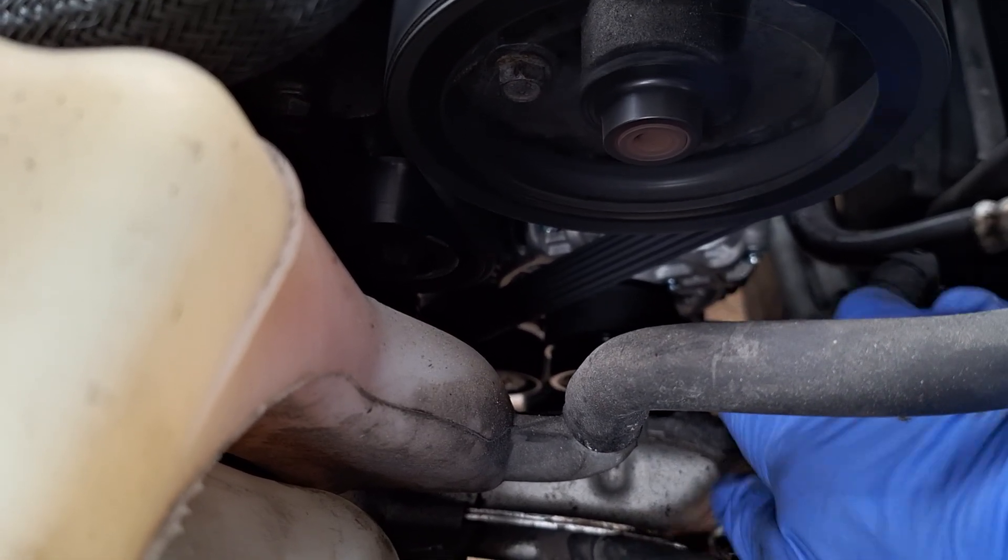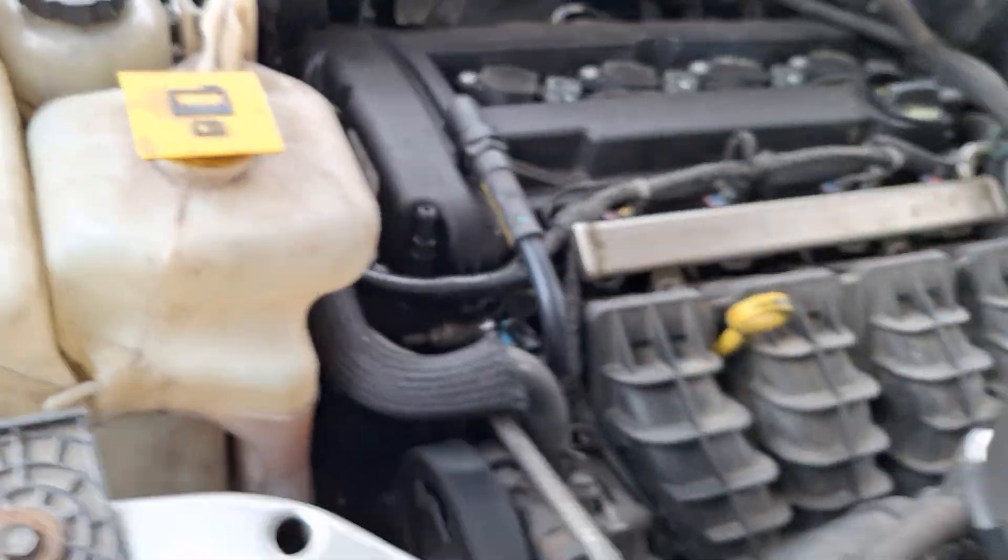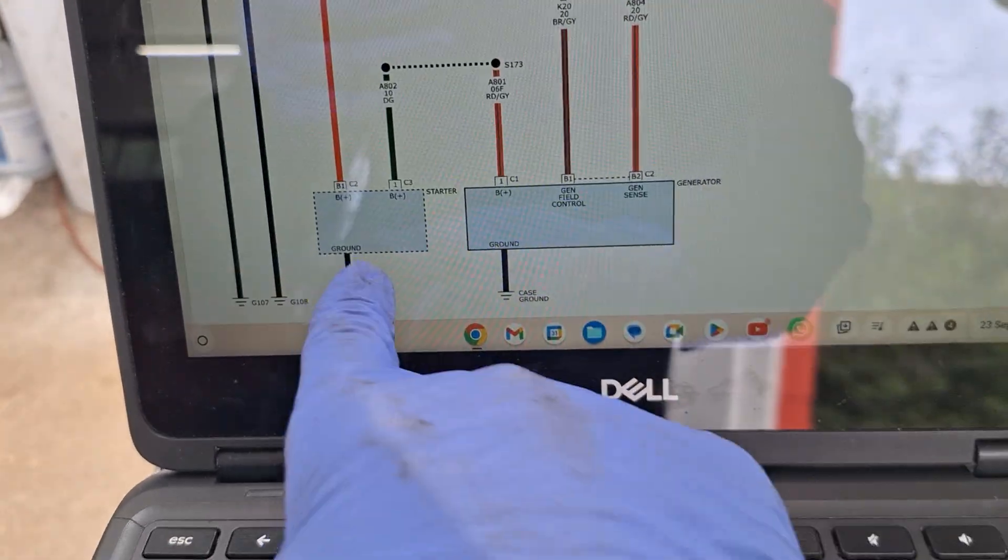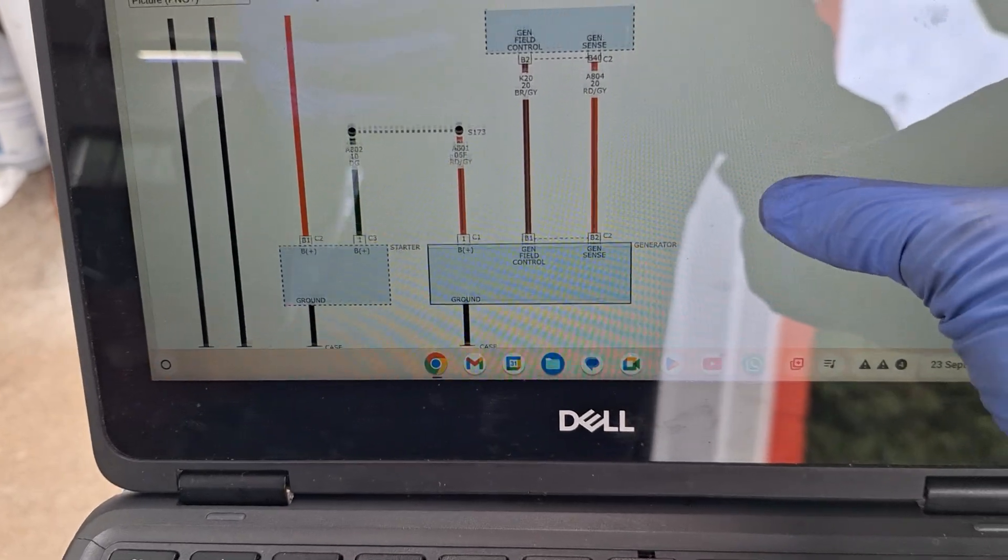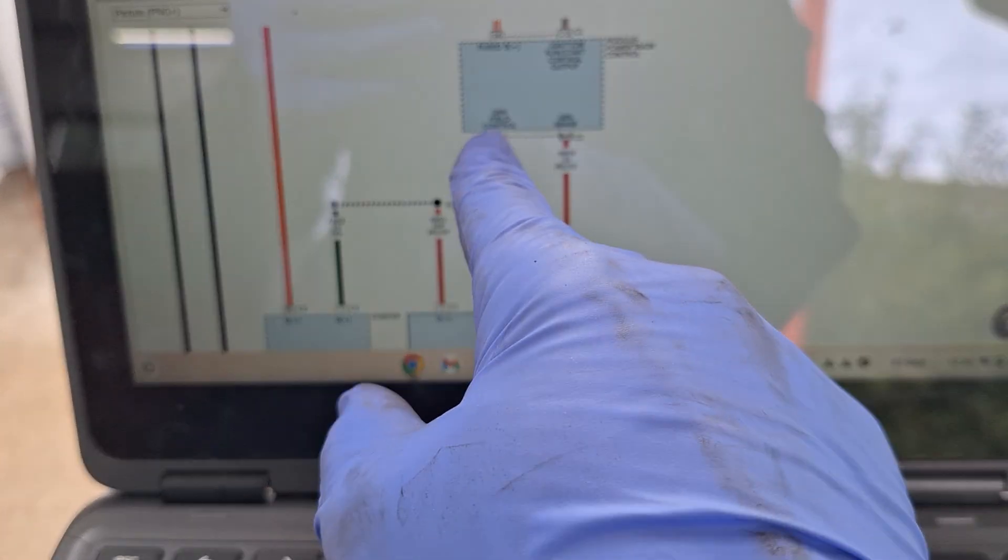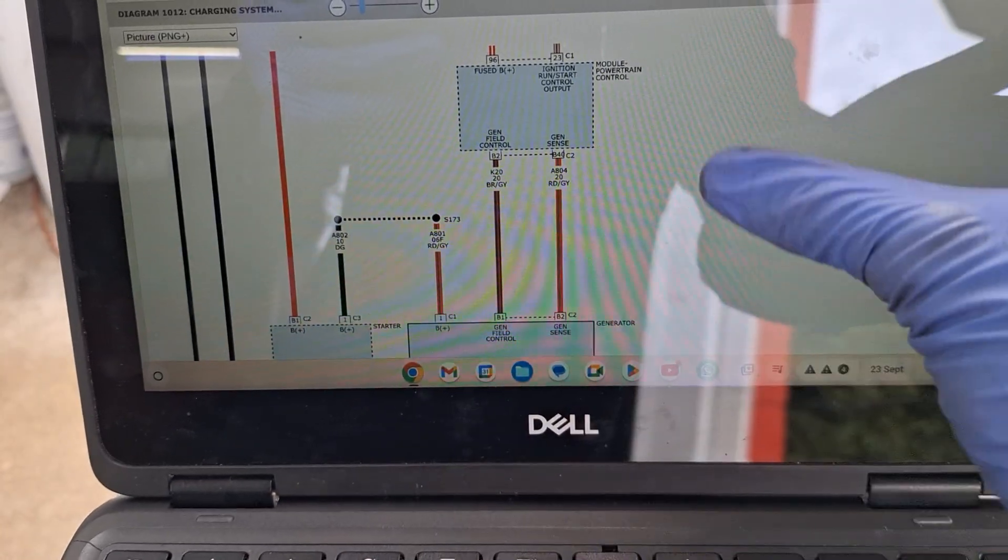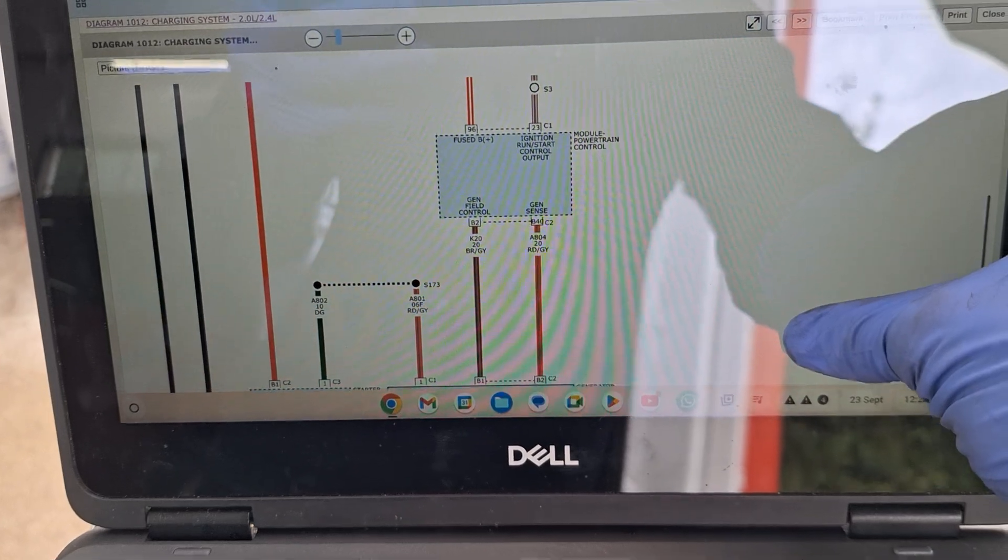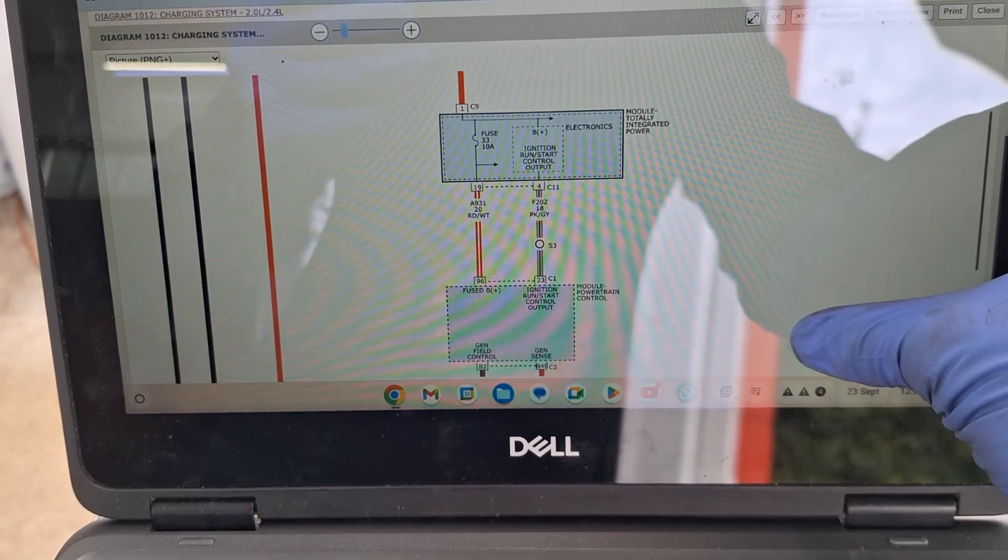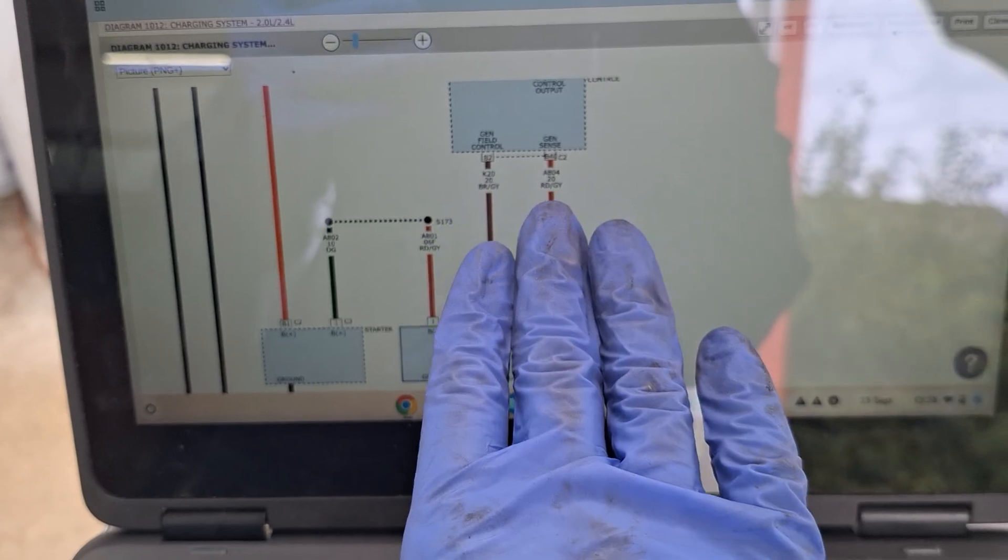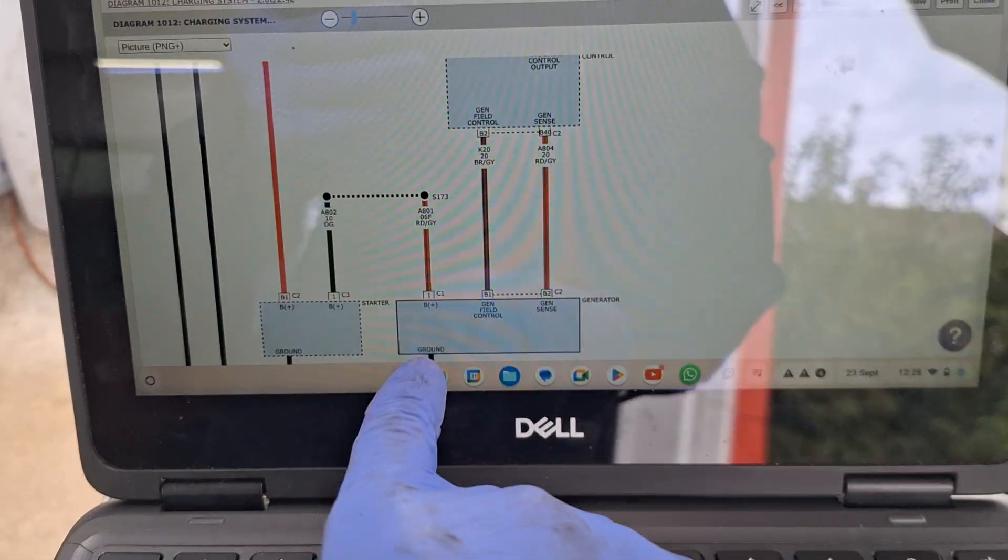So looking at the wiring schematic, this is our starter, this is our alternator. We got sense and gen fuel control wire coming from alternator to PCM. Since they're not talking about these two control circuits, we're not going to worry about that. Let's focus on this right here, what is happening.